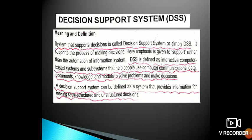A Decision Support System can be defined as a system that provides information for making semi-structured and unstructured decisions. Using a pyramid model, we have three levels of management: top level, middle level, and lower level. The decisions that are unstructured and semi-structured occur at these levels, and the best decision is to make a structured and ideal decision.